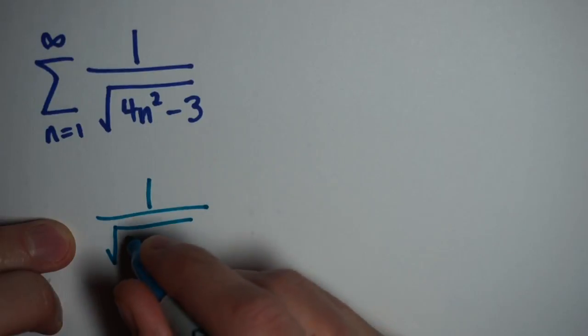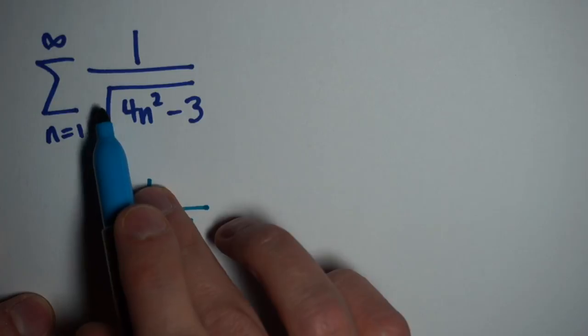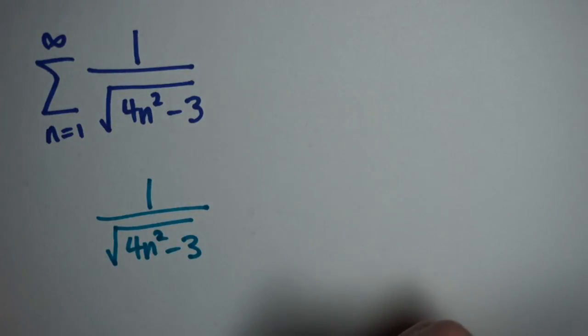So we start with our function 1 over the square root of 4n squared minus 3. And this, because of the square inside the square root, this is going to act something like 1 over n. So I expect this to diverge.